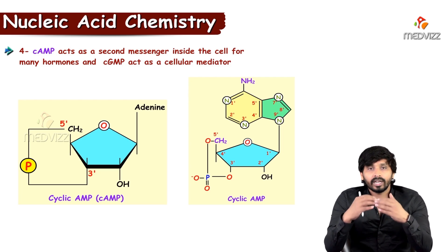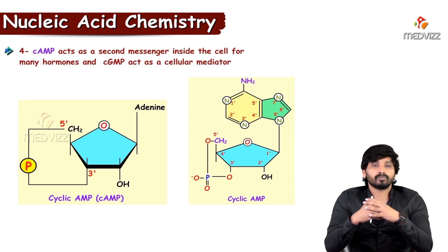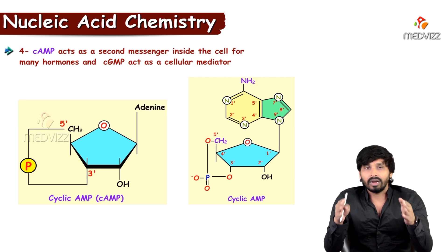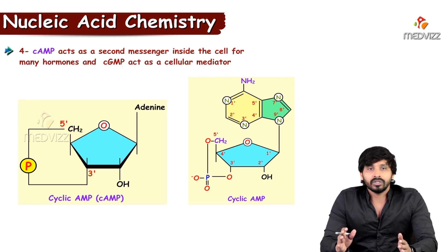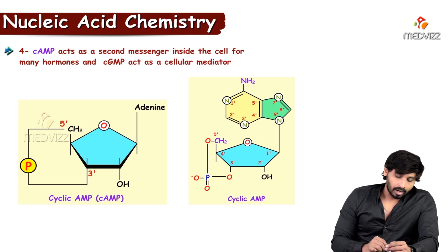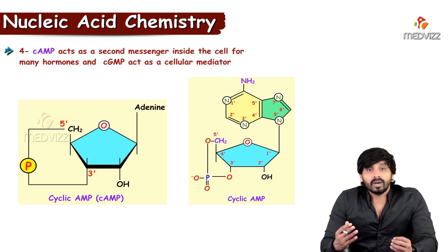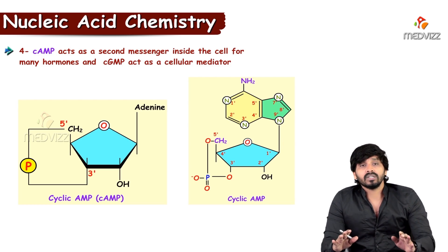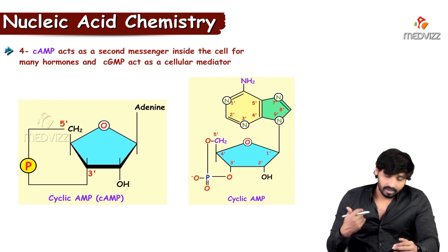To transfer this message from outside to inside the cell, a messenger is needed — that messenger role is taken over by cAMP. Hormones cannot enter inside the cell; the cell membrane does not allow it. cAMP plays a major role in most hormonal actions, while a few hormones require cGMP. Both cAMP and cGMP act as cellular mediators — cAMP is cyclic adenosine monophosphate and cGMP is cyclic guanine monophosphate.